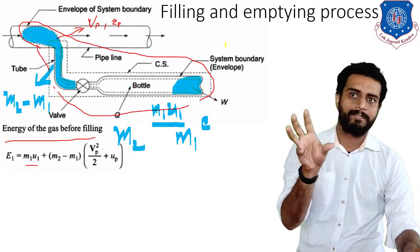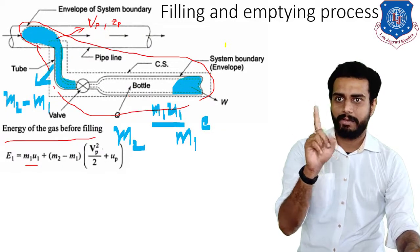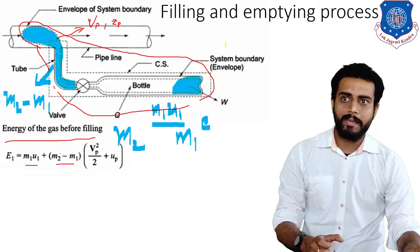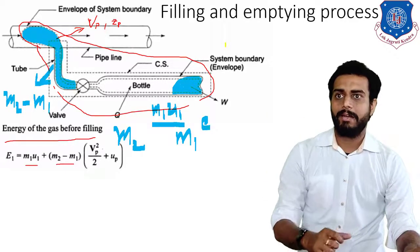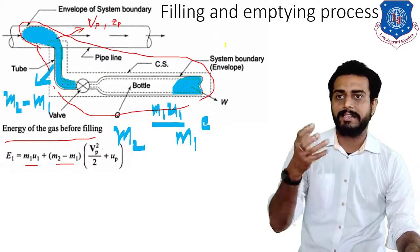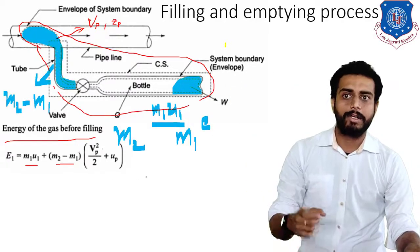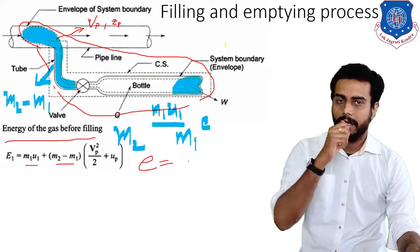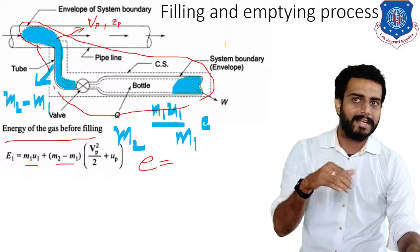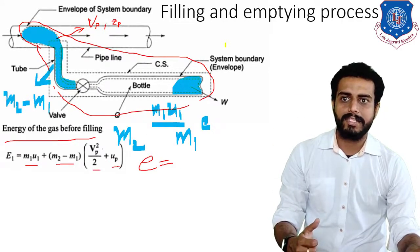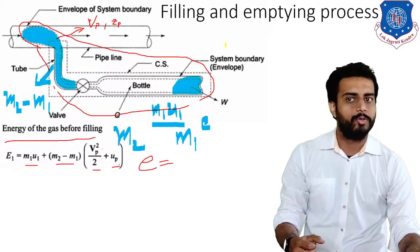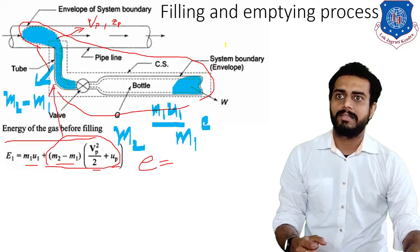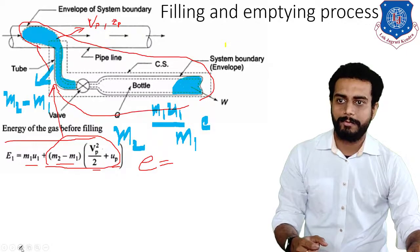We can write the energy of the gas before filling as E1 = M1·U1 for the gas already in the bottle, plus (M2 - M1) carrying the energy corresponding to the pipe properties. Potential energy will be neglected, so we are left with kinetic energy Vp²/2 and internal energy Up. This energy will be carried by the mass highlighted in blue — the gas in the pipeline ready to enter.